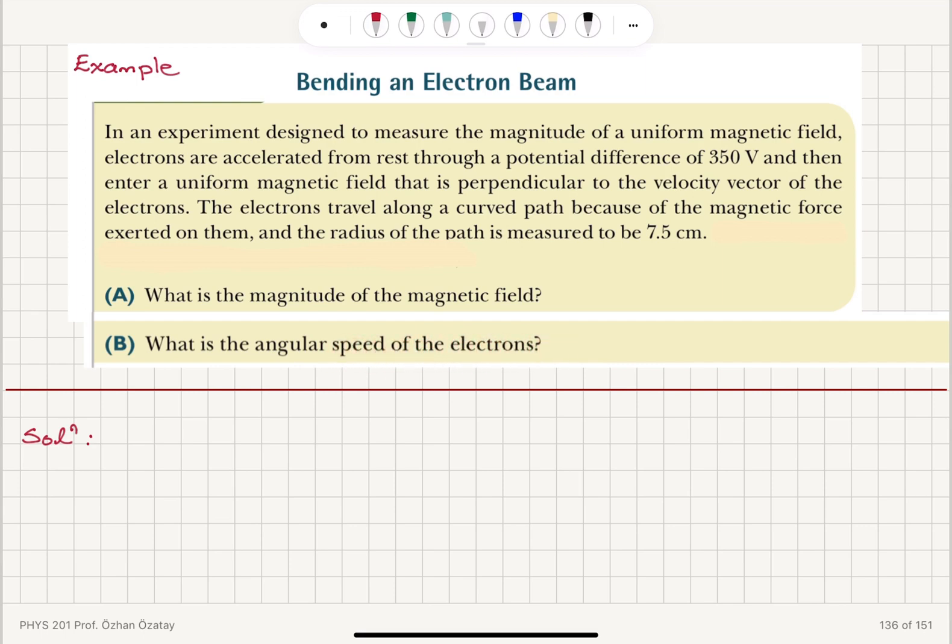First of all, I note that I have a uniform magnetic field and the electrons enter the uniform magnetic field perpendicular to the velocity vector of the electrons. So in this process, when the electrons are first accelerated under a potential difference, the potential energy will be converted into kinetic energy. So, delta K plus delta U will be 0.